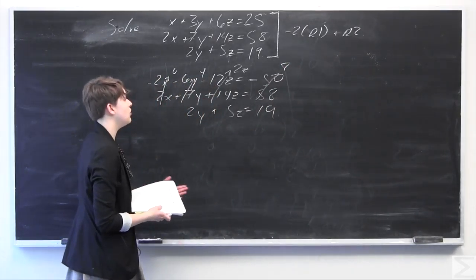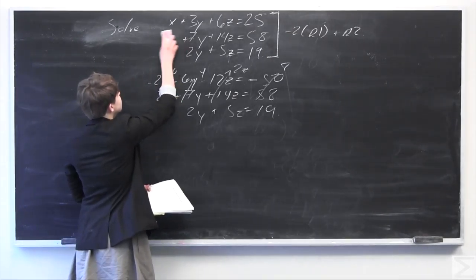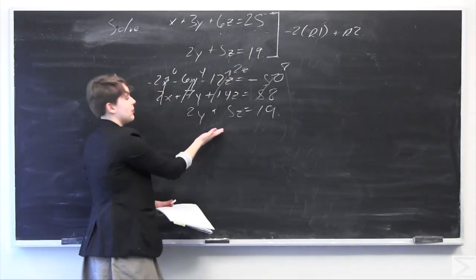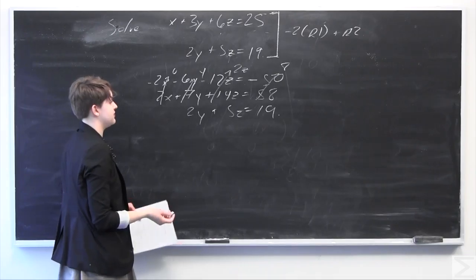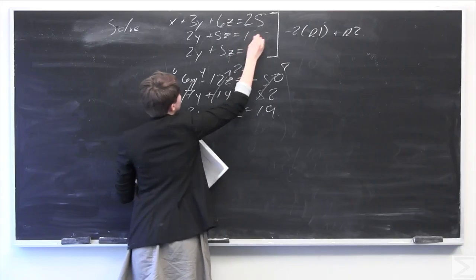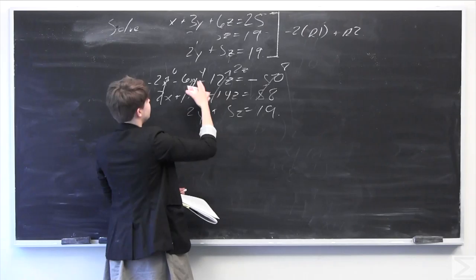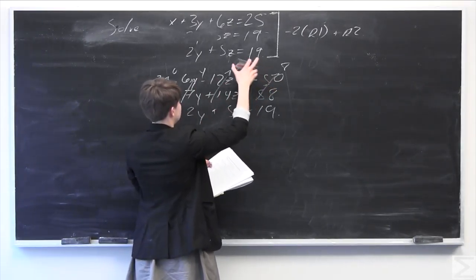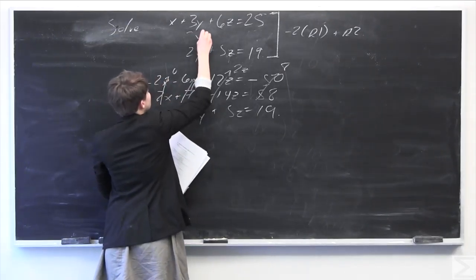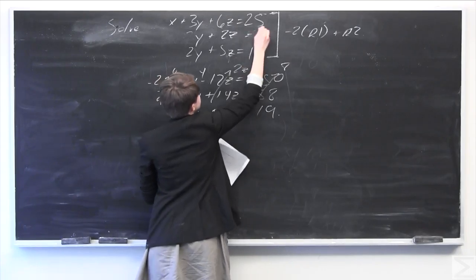Now we're going to replace the second row. Actually, let me correct this. What we have here is y plus 2z equals 8.